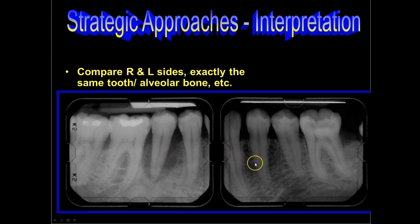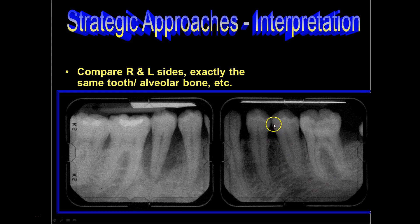We're also looking at two different types of image quality: parallel versus non-parallel. In a parallel image, cusp tips are superimposed over one another. In the other image, the sensor was tilted too much and therefore the buccal is superimposed over the lingual, tipped toward the lingual aspect, which makes these teeth look much more squatty. This is a first premolar and this first premolar — this tooth is shorter than this tooth. The image is distorted by two to three millimeters of foreshortening, which makes them look like squatty bodies.